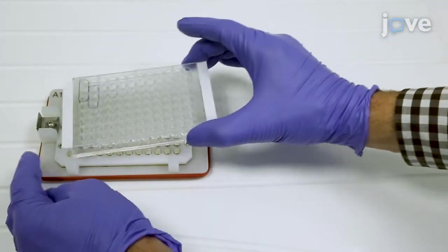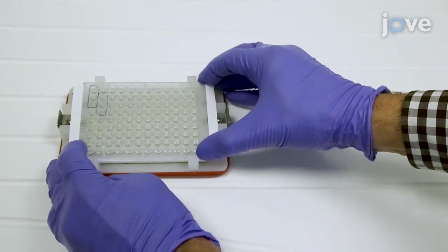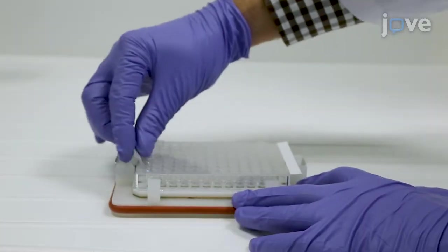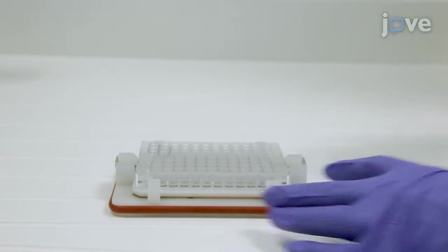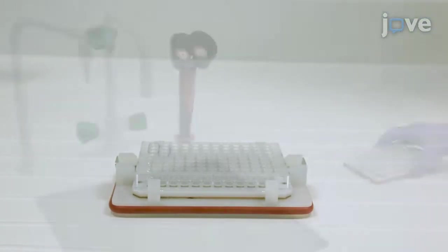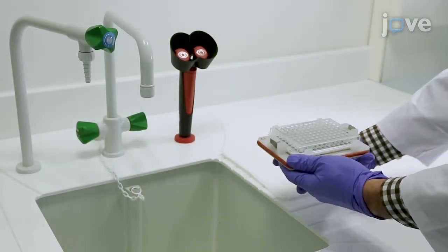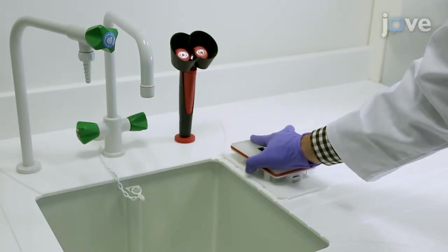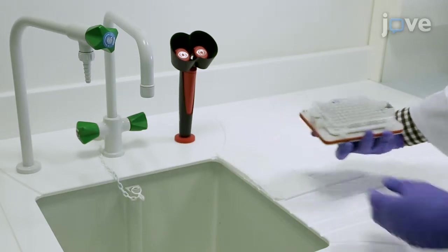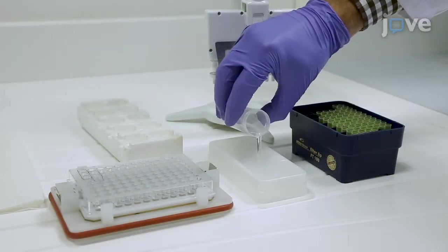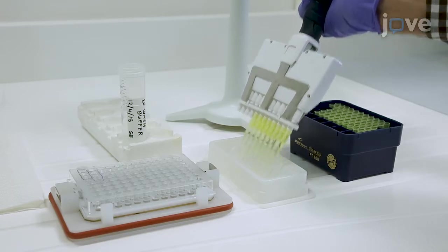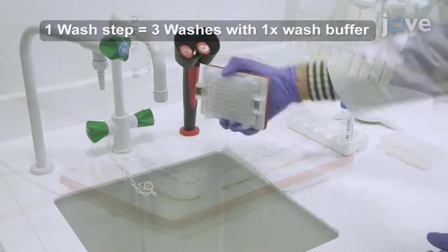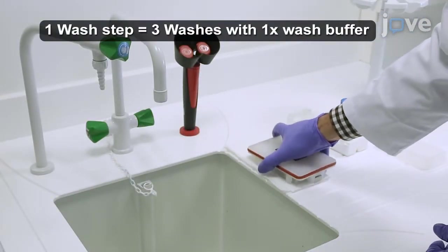The next day, mount and lock the plate on a handheld magnetic plate washer. Then remove the pressure seal and wait one minute for the magnetic beads to settle. Now perform a wash. Drain the plate over a sink and use a tissue paper to gently blot it dry. Then load all the wells with 100 microliters of 1X wash buffer and wait 15 seconds. Repeat this process three times to complete the wash step.